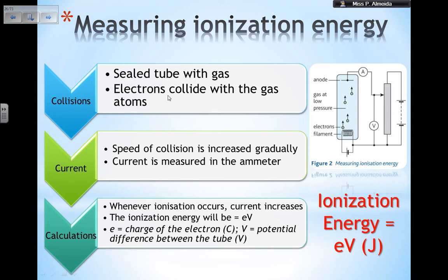How does this work? First, the electrons collide with the gas atoms as they move through the sealed tube. The speed of the collisions is increased gradually, so I can have more electrons moving faster. The current is measured by the ammeter in series with the circuit.